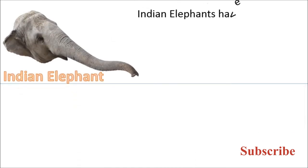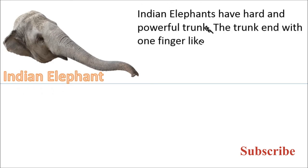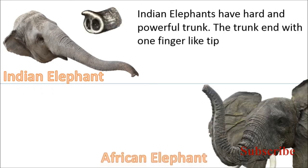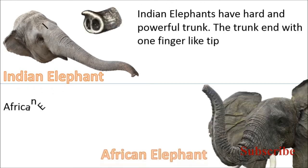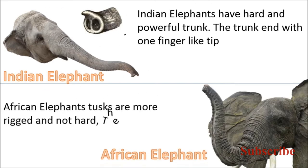Indian elephants have a hard and powerful trunk. The trunk ends with one finger-like tip. African elephants' trunk is more ridged and not hard. The trunk ends with two finger-like tips.